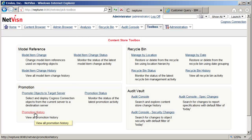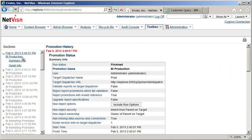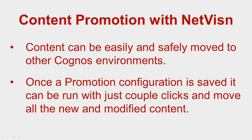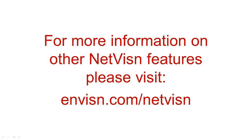Back in the toolbox tab we can see that all promotion history is available. From watching the demo you have seen that moving Cognos content to other environments can be done easily and safely using the NetVision promotion feature. The process includes dependency checking and report validation to assure that the moved content will function properly. Once a promotion configuration has been created, it can be easily run to capture all the new and modified content that has occurred since the last promotion. For more information on other NetVision features please visit Envision.com/NetVision.